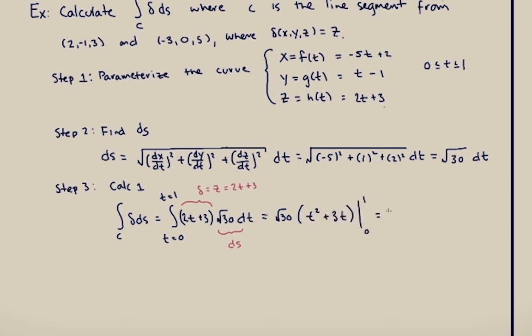And that's it. I got 4 square root of 30. If the units of delta were kilograms per cubic meter, then these units would be kilograms.